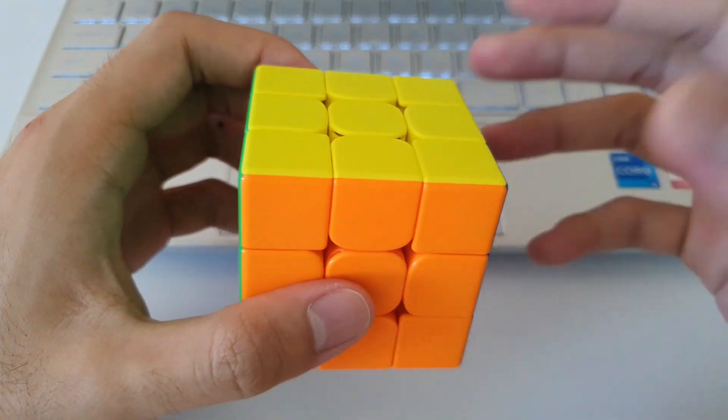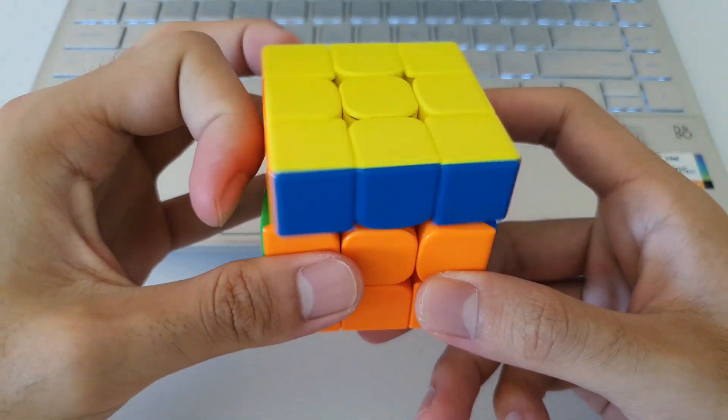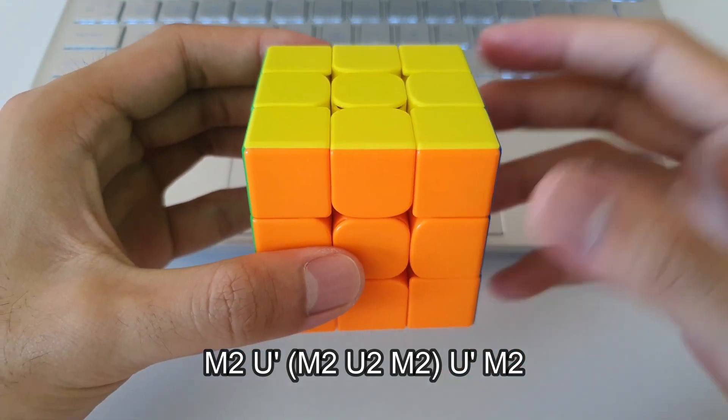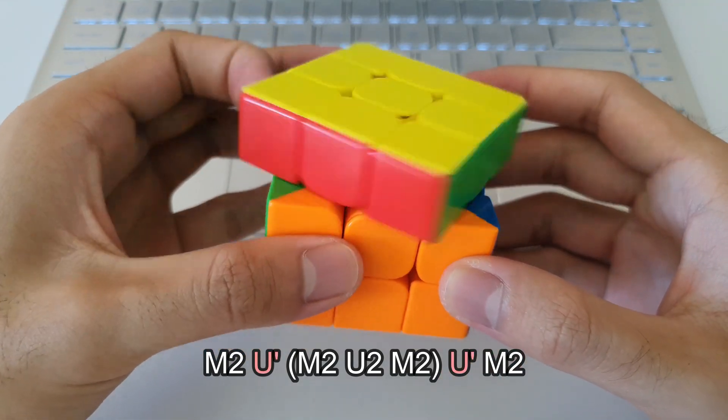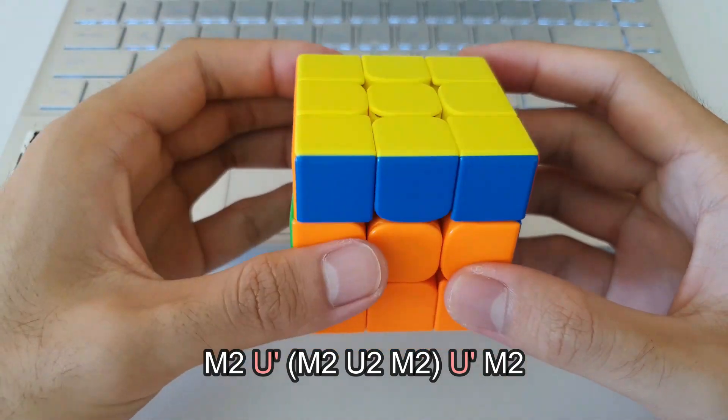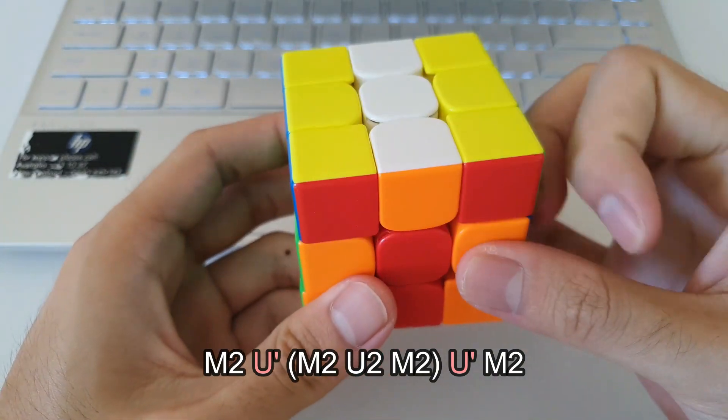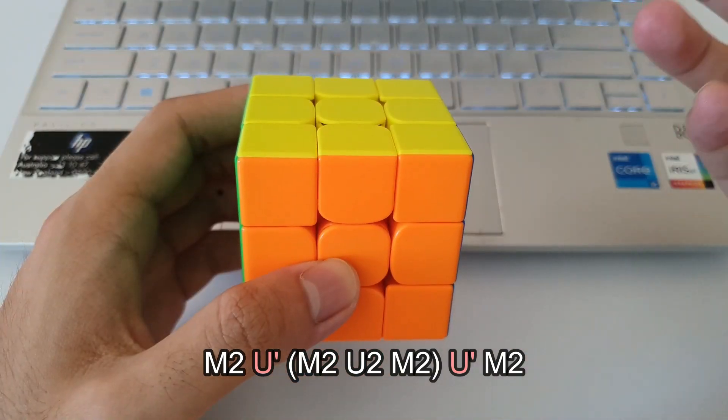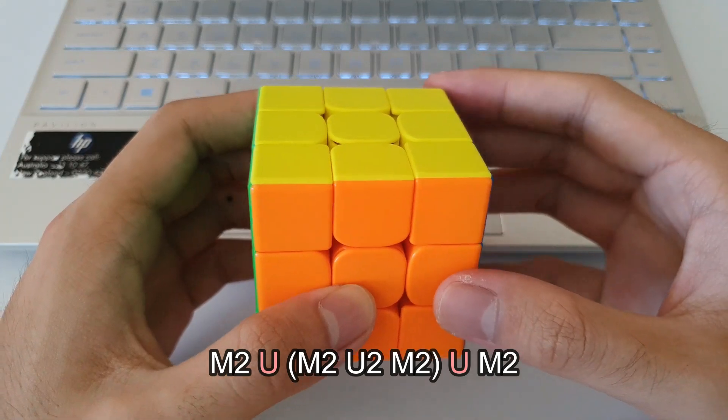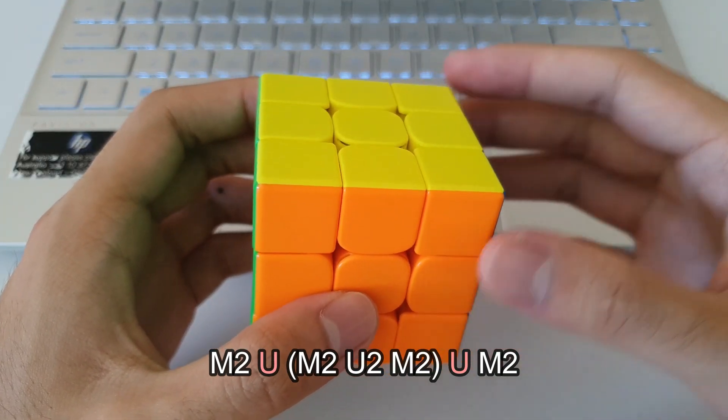So you may have noticed that I use my right hand for the M moves and my left hand for the U moves. And so for me it's more comfortable doing U prime rather than U's. That's why in my algorithm I have U prime. If you feel it's more comfortable to do M moves with your left hand and then U moves with your right hand, well then you can modify the algorithm to do U moves instead of U prime.